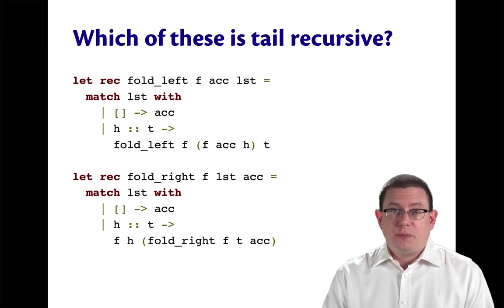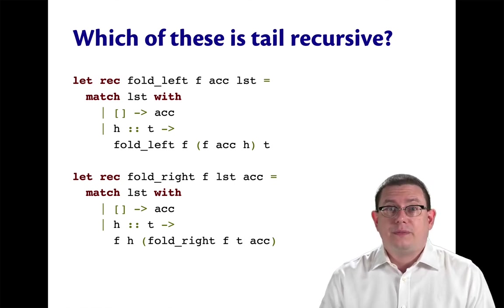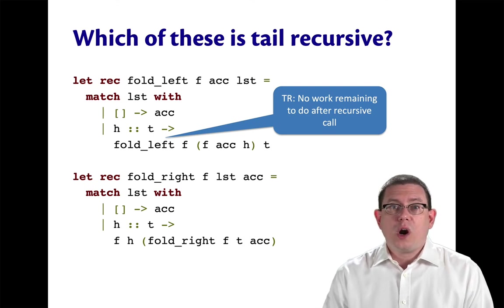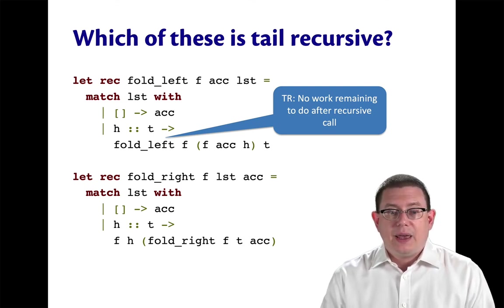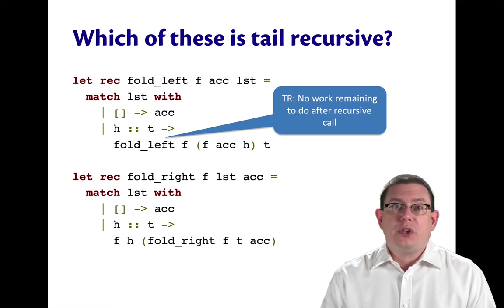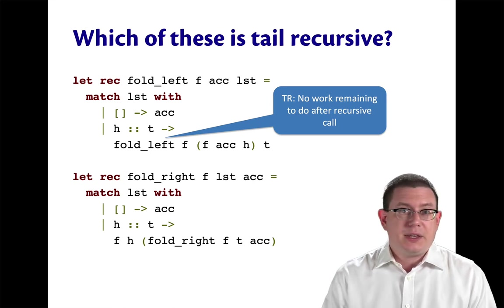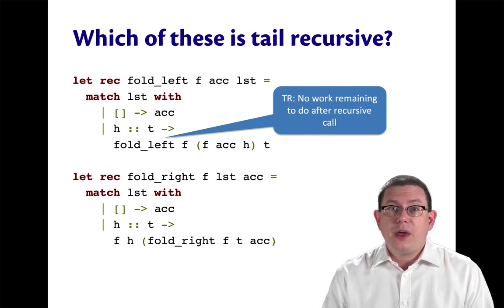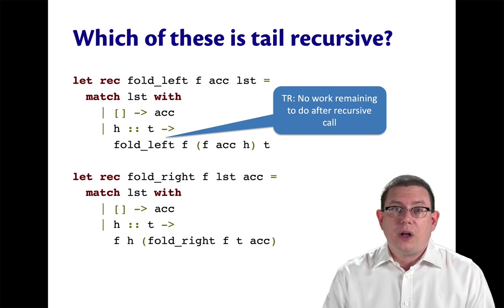There's another distinction between fold left and fold right. One of them is tail recursive and the other is not. Can you spot which one is? In fold left, there's no work remaining to be done after the recursive call. Whatever the right-hand side of that pattern match is, we're just going to return the result of the recursive call, not do anything further to it in the body of fold left. So that makes this function tail recursive, and therefore it will require only constant stack space.